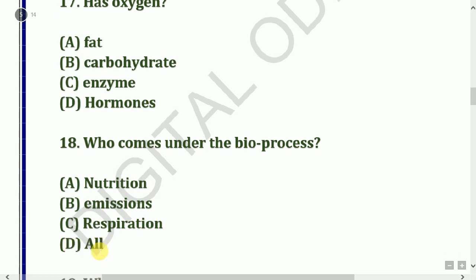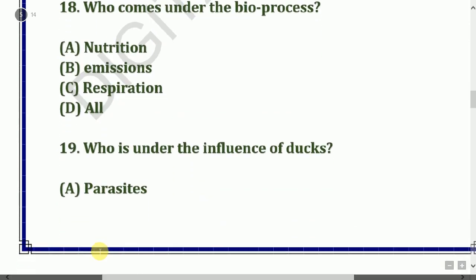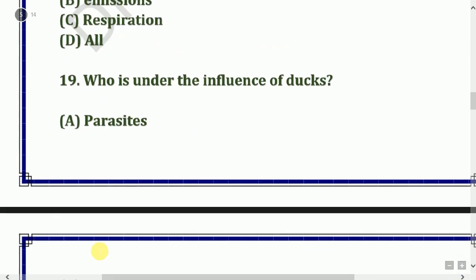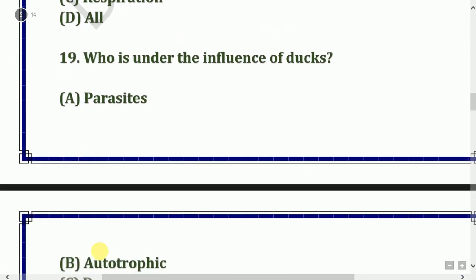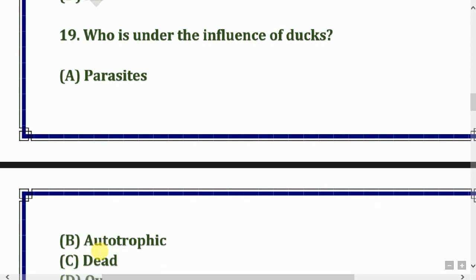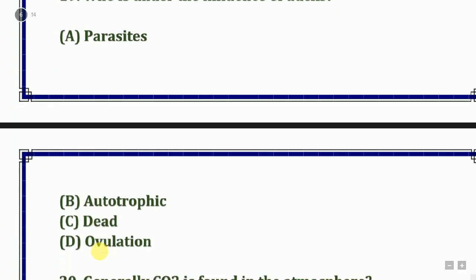Next question: Who is under the influence of drugs? Options: Ortho-tropic parasites or ovulation. The answer is D — stagnation.